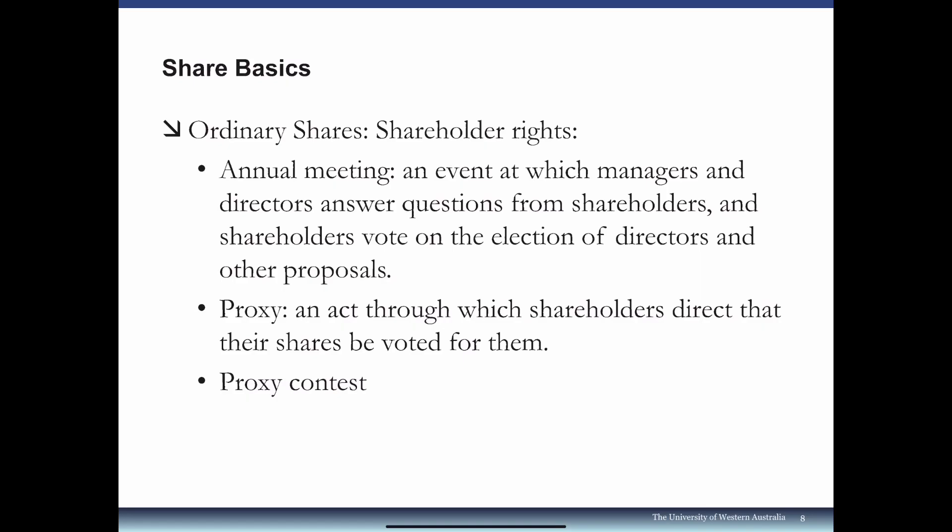All shareholders have the right to attend annual meetings and cast their votes directly. But in practice, most either allow the board to vote for them or direct their shares be voted via proxy — an act through which shareholders direct how their shares are voted or provide explicit instructions. At annual general meetings, managers and directors answer questions from shareholders, who vote on the election of directors and other proposals. Occasionally, there are dramatic proposals from a shareholder group — inserting or removing a director, or opposing management — leading to a proxy contest where each side actively solicits proxies from all shareholders.